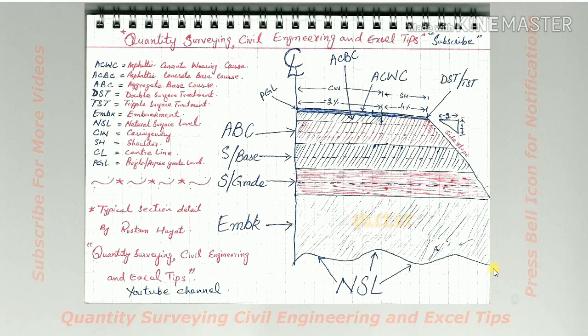So this is the basics of typical road section. These are the abbreviations I use in this video: ACWC—asphaltic concrete wearing course, ACBC—asphaltic concrete base course, ABC—aggregate base course.